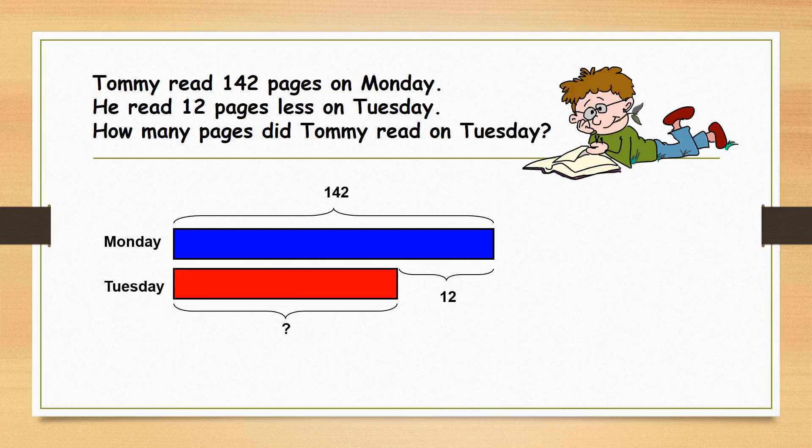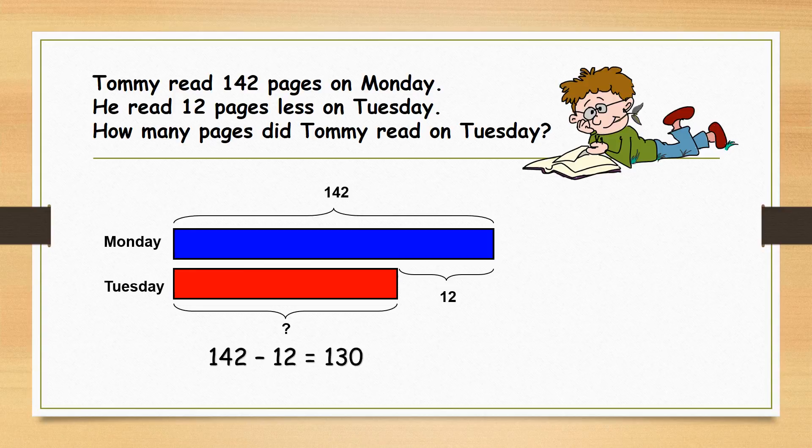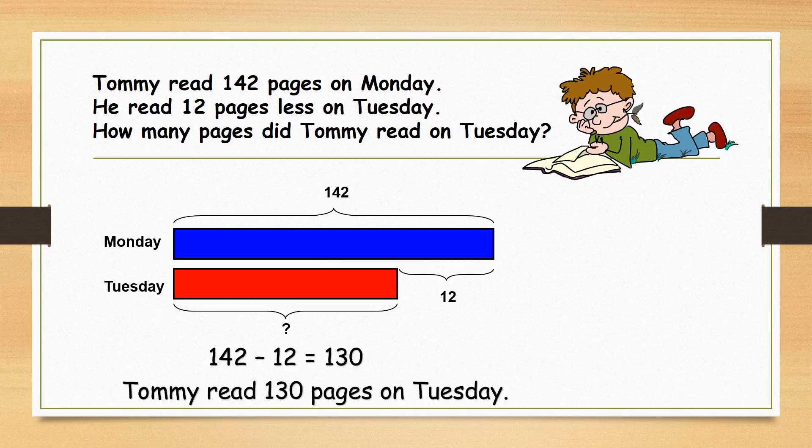We find the difference between the number of pages read on Monday and the 12 pages which is read less. 142 minus 12 is 130. Therefore Tommy read 130 pages on Tuesday.